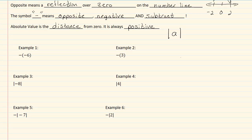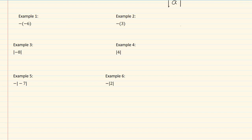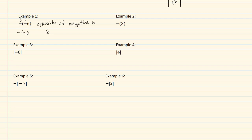Let's take a look at our examples. In example one, we have two of our dash marks. This means that we have the opposite of negative six. So the opposite of negative six will be a positive six. Any time you come across something like this, you want to get yourself in the habit of circling those and rewriting it as a plus six or whatever number that you happen to have.